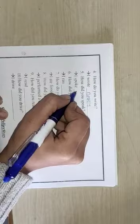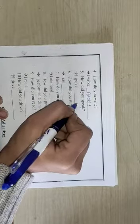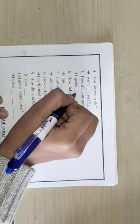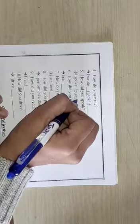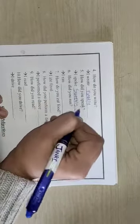Number 5. How did you speak? I spoke sweetly. So we have to write here sweetly. In the same way you have to do 6 to 10 in your homework.